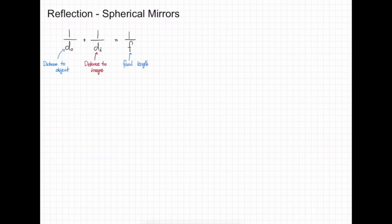For the derivation of this, I'm going to draw a concave mirror. Now I'm going to label the focal point and the centre of curvature. Now I'm going to put an object in front of our mirror. This is my object; it has a height of HO, and it has a distance away from the mirror.